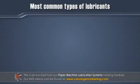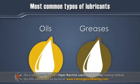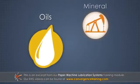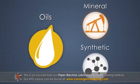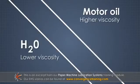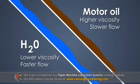The two most common types of lubricants are oils and greases. Oils can be mineral oil-based or synthetics. They are classified by their viscosity, or how easily they flow, and the selected oil must be matched to the equipment being lubricated.